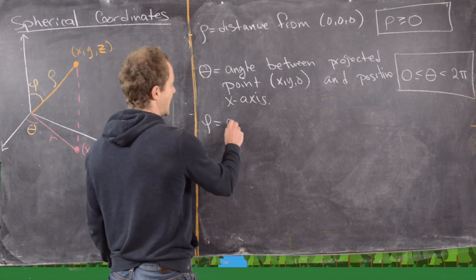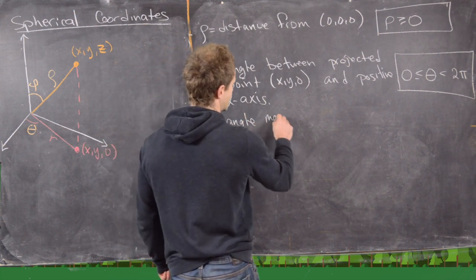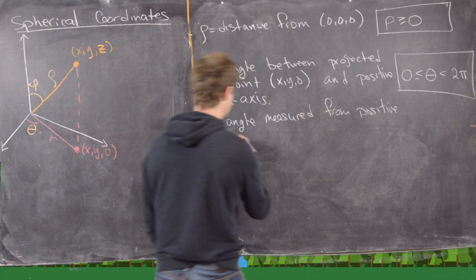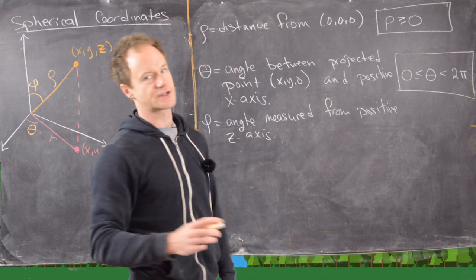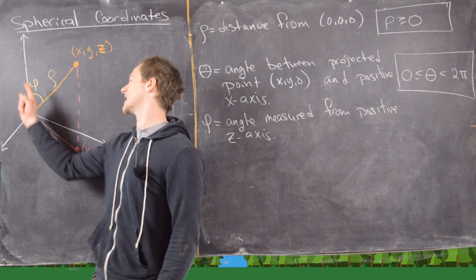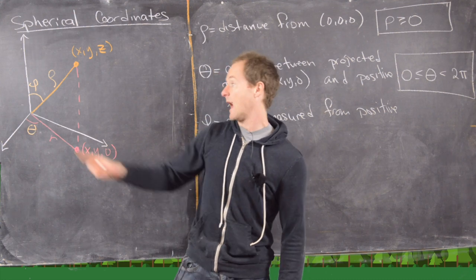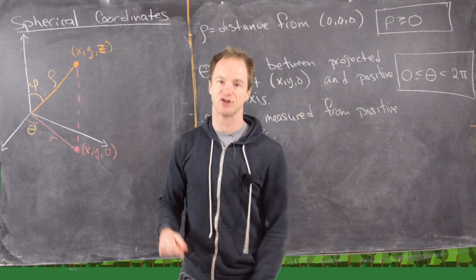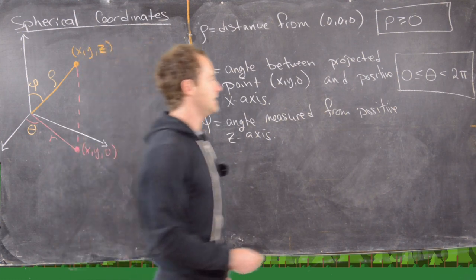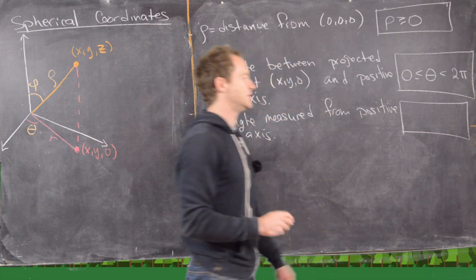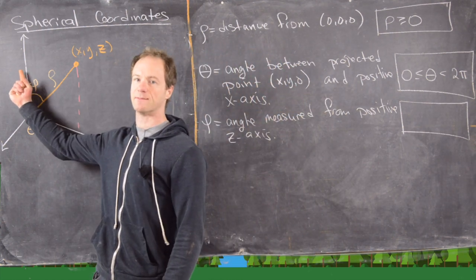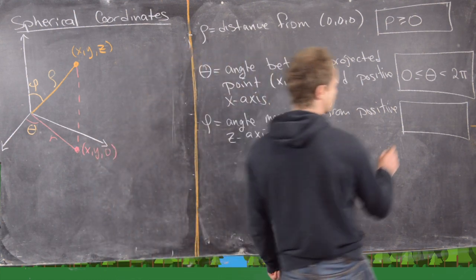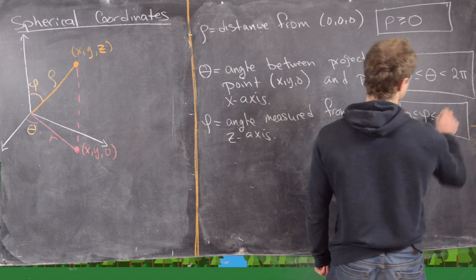And then φ is the angle measured from the positive z-axis — specifically the angle between the positive z-axis and the ray defined by this point and the origin. φ equals 0 is the positive z-axis, and 180 degrees, in other words π, would be the negative z-axis. And that's all we need, so we'll have 0 ≤ φ ≤ π.